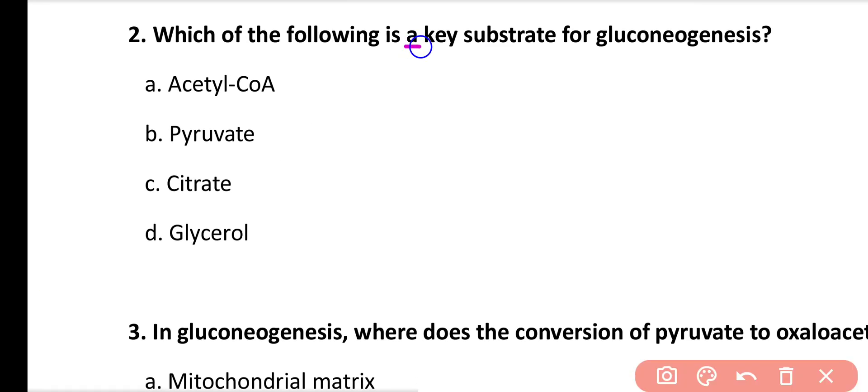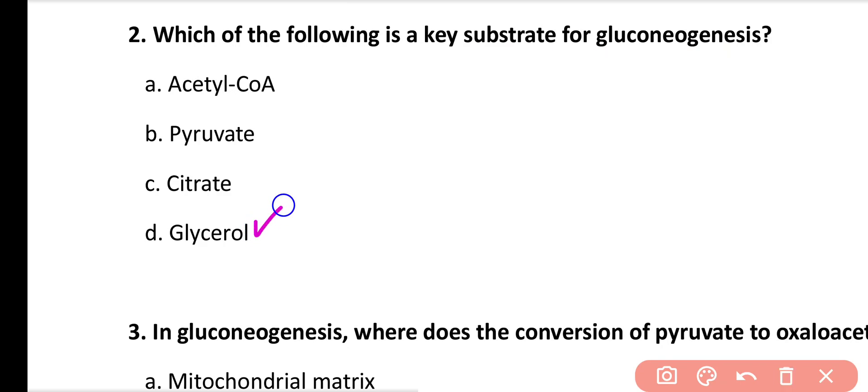Question number 2: Which of the following is a key substrate for gluconeogenesis? Options: acetyl coenzyme A, pyruvate, citrate, glycerol. Correct answer is option D. Glycerol is an important substrate for gluconeogenesis. In addition to glycerol, lactate and glucogenic amino acids are also important substrates for gluconeogenesis.